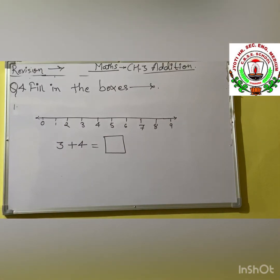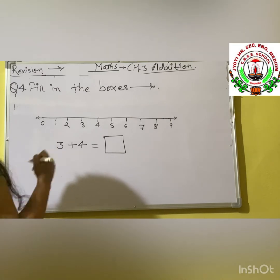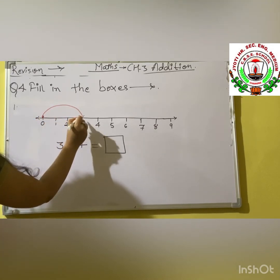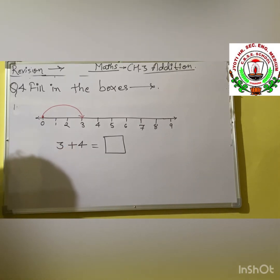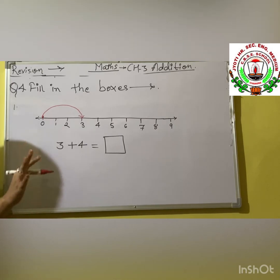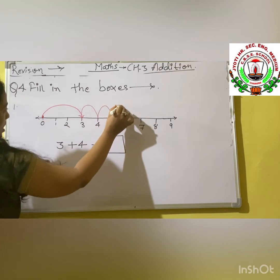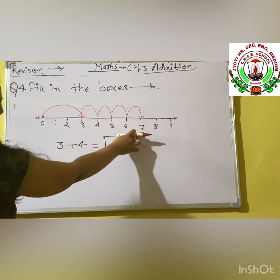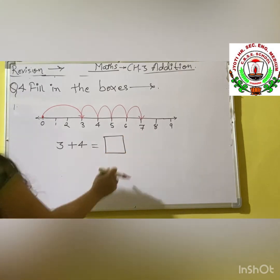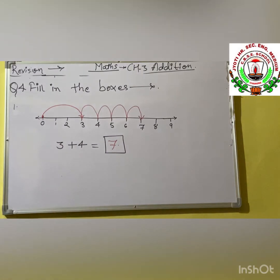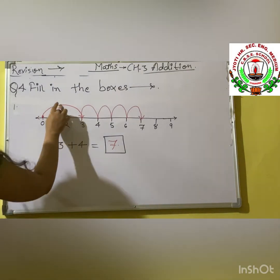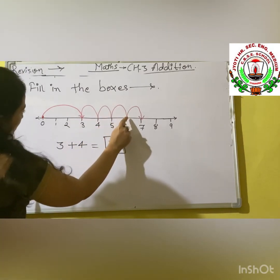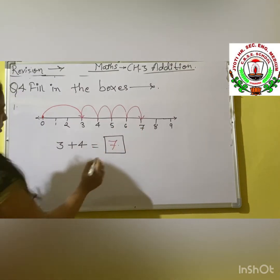First we stand at 3 on the scale. In 3 plus 4, how many times do we jump? 4 times. We jump: 1, 2, 3 and 4. We land on number 7. So here we have our answer: 7. First we jumped to 3, then we added 4 by jumping 4 times, and we got our answer — 7.